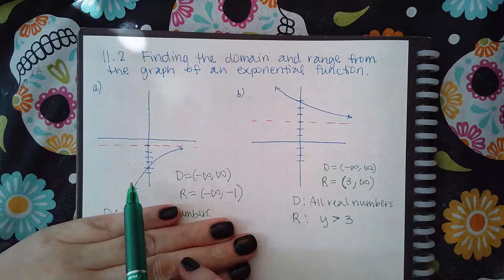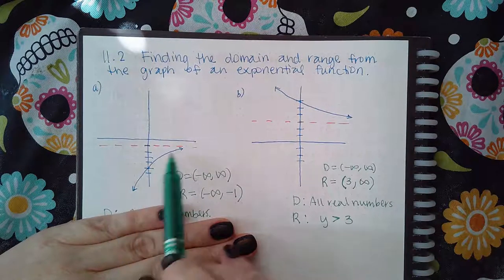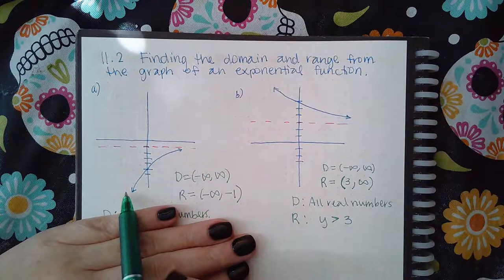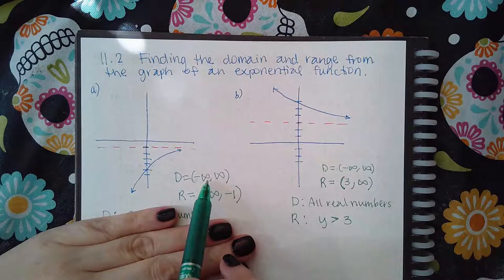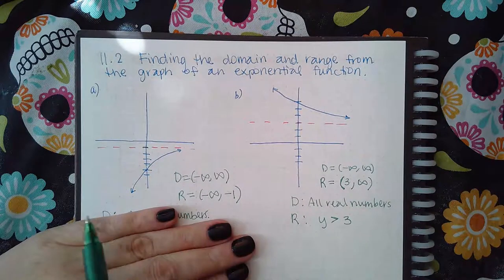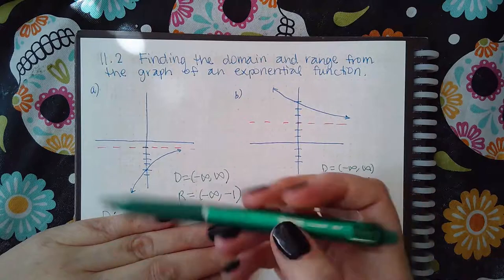When you're finding the domain, ask how far to the left does the graph go and how far to the right does the graph go. For any exponential, it would always go to the left forever and to the right forever, so the domain is negative infinity to infinity.